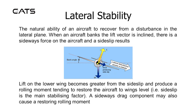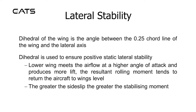Lateral stability is the natural ability of an aircraft to recover from a disturbance in the lateral plane. When an aircraft banks, the lift vector is inclined; there is a sideways force on the aircraft and a sideslip results. Lift on the lower wing becomes greater from the sideslip and produces a rolling moment tending to restore the aircraft to wings level — sideslip is the main stabilising factor. A sideways drag component may also cause a restoring rolling moment. Dihedral of the wing is the angle between the 0.25 chord line of the wing and the lateral axis, and is used to ensure positive static lateral stability. The lower wing meets the airflow at a higher angle of attack and produces more lift; the resultant rolling moment tends to return the aircraft to wings level. The greater the sideslip, the greater the stabilising moment.